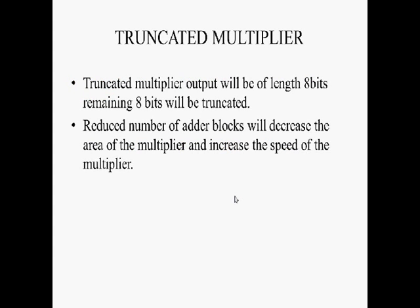Next, the truncated multiplier. In an ordinary multiplier, the length of the output will be 16 bits, but in a truncated multiplier, only the first 8 bits are considered. The remaining 8 bits are truncated — that is, the number of adder blocks is reduced. In a truncated multiplier, we use a reduced adder block. The reduced adder block decreases the area of the multiplier and also increases the speed of the multiplier, giving better performance of the FIR filter.